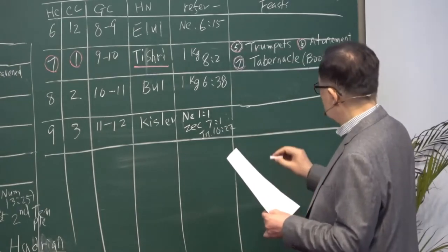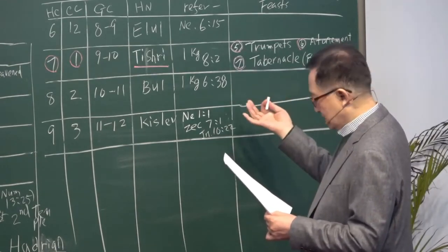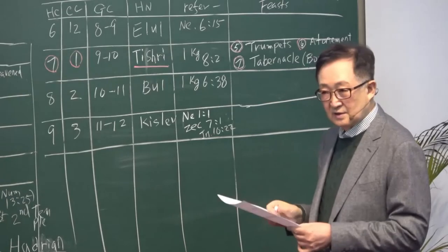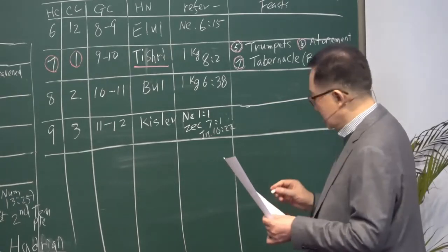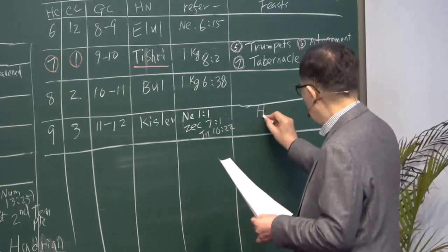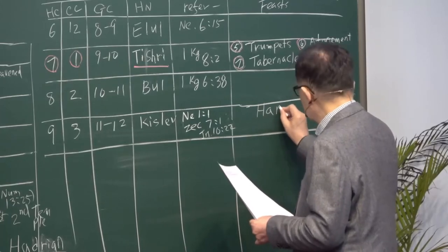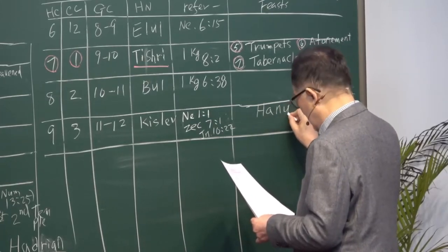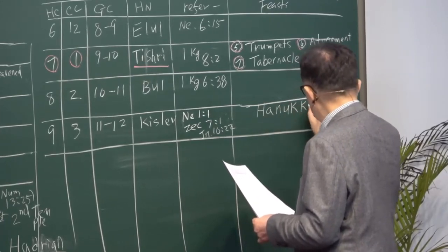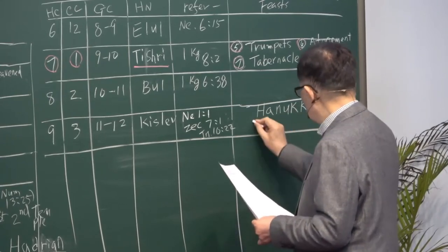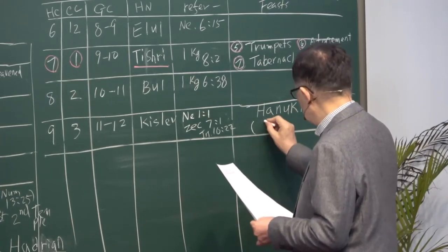Month of Tishri, I will study, we will study more later. In the month of Tishri, the Bible reference is Nehemiah 1:1, Zechariah 7:1, and in the New Testament, John 10:22.